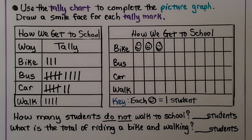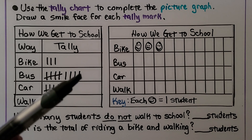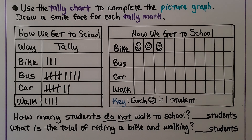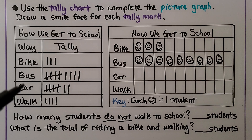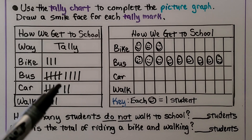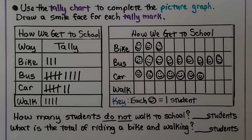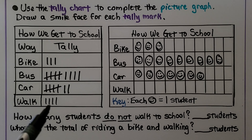Counting the tally marks for bus gives us nine, so we draw nine smile faces for bus. The tally chart shows seven for car, so we draw seven smile faces for car. For walking, there are four tally marks, so we put four smile faces in the picture graph for walk.